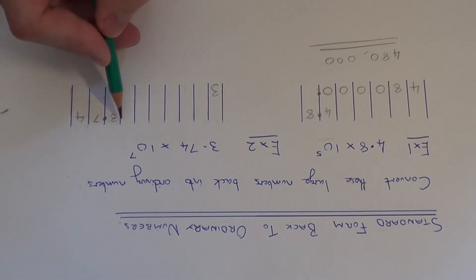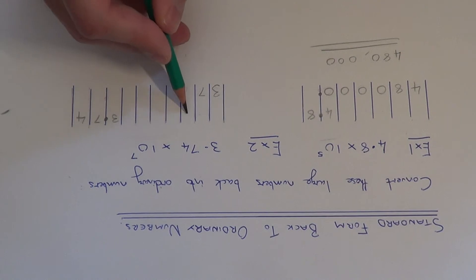Let's move the 7 next. 1, 2, 3, 4, 5, 6, 7. Let's move the 4 next. 1, 2, 3, 4, 5, 6, 7.